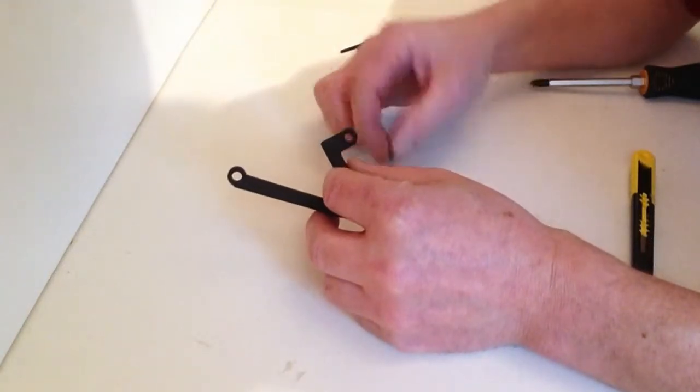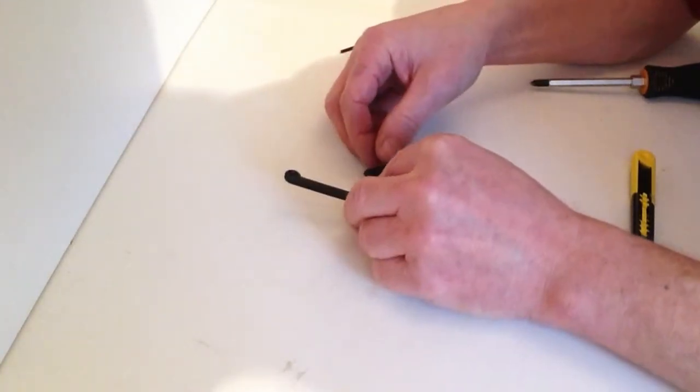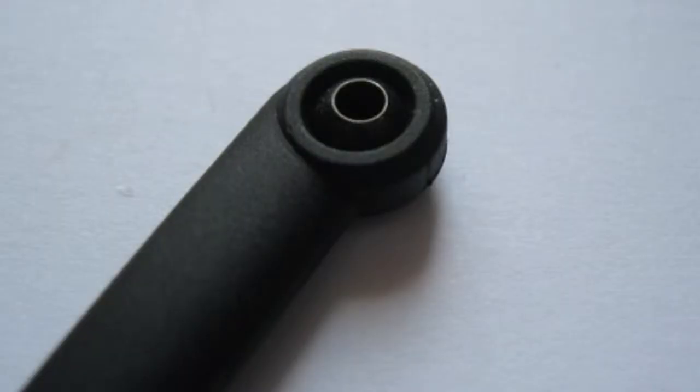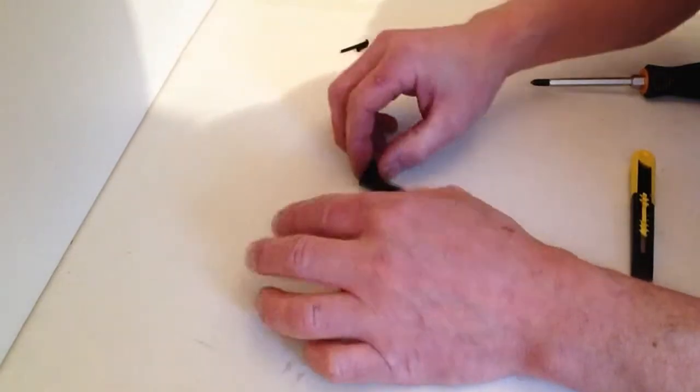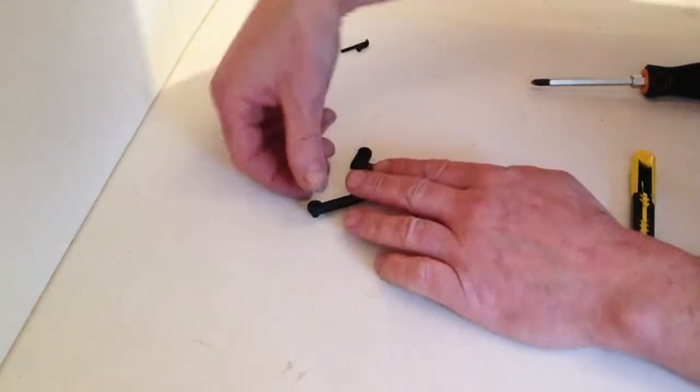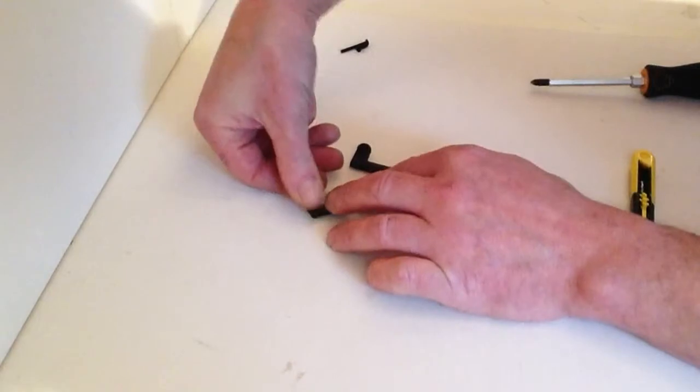Insert it into the shorter of the two with the flat end facing down, and then do exactly the same with the longer of the two.